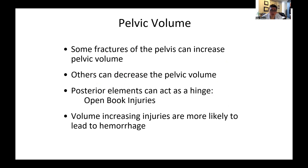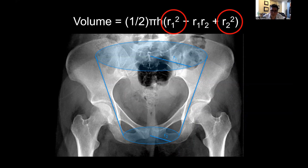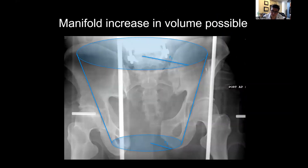Es importante tener en cuenta el volumen pélvico. Algunas fracturas, en particular las de tipo APC, aumentan el volumen pélvico, lo que significa más espacio para que la sangre se acumule. La ecuación para una porción de cono, como es la forma del interior de la pelvis, está relacionada con el radio al cuadrado. Si tienes incluso unos pocos centímetros de diástasis en la parte delantera, puedes duplicar o triplicar el volumen dentro de la pelvis muy rápidamente. Los pacientes pueden perder litros de sangre en su pelvis, haciendo estas lesiones potencialmente mortales si no se tratan.